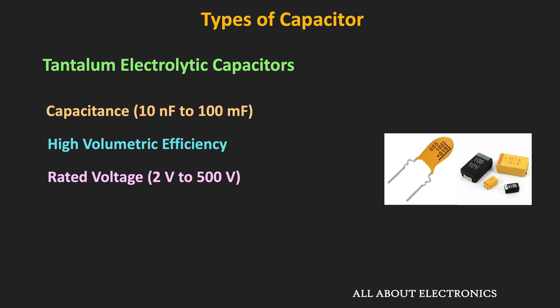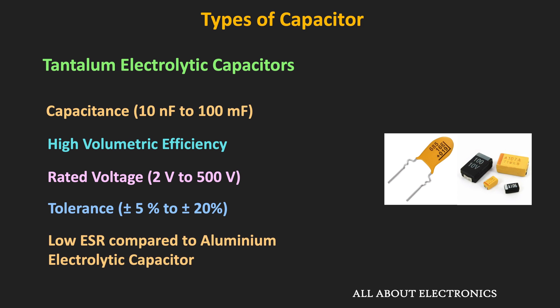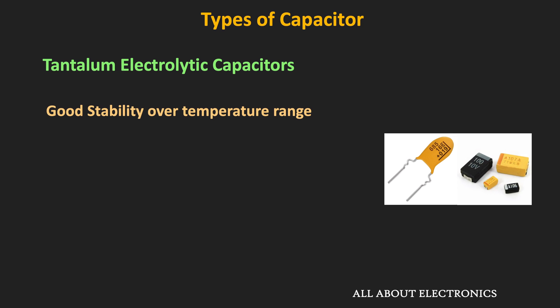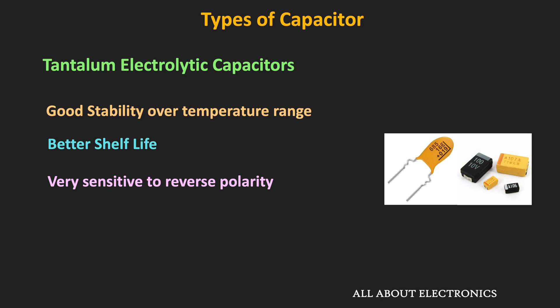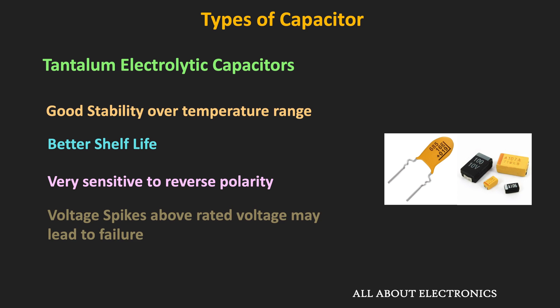Commercially available tantalum capacitors are rated from 2V to 500V. Similar to aluminum capacitors, they also have a large tolerance. But the ESR of tantalum capacitors is lower than aluminum capacitors, so they can withstand higher ripple currents. They are very stable over temperature and are very reliable with a longer shelf life. However, tantalum capacitors are very sensitive to reverse polarity — if the polarity of the applied voltage is reversed, it may lead to destruction. They are also sensitive to voltage spikes above the rated voltage.